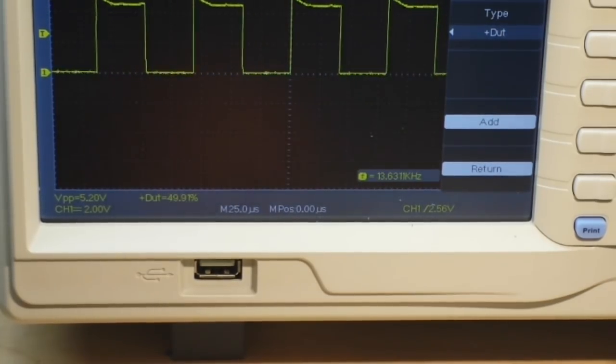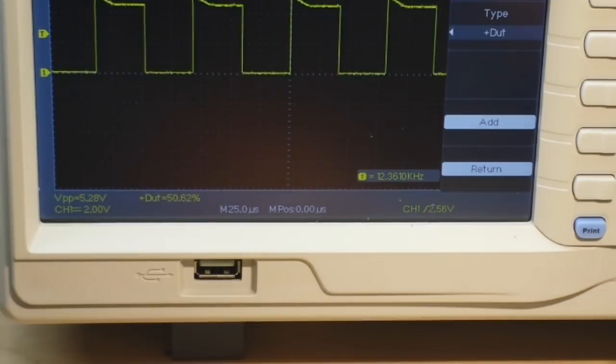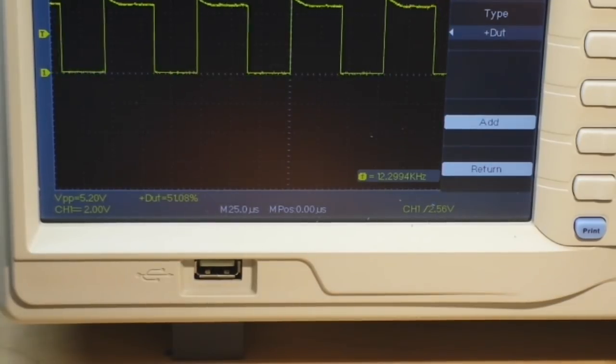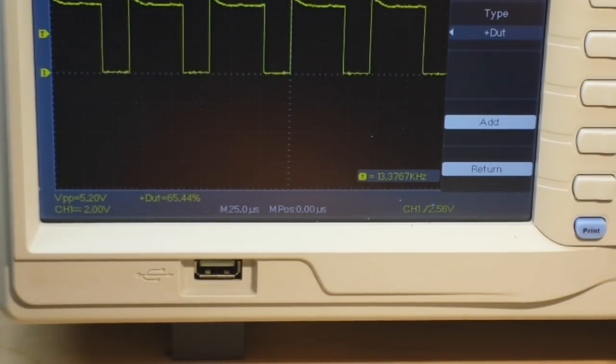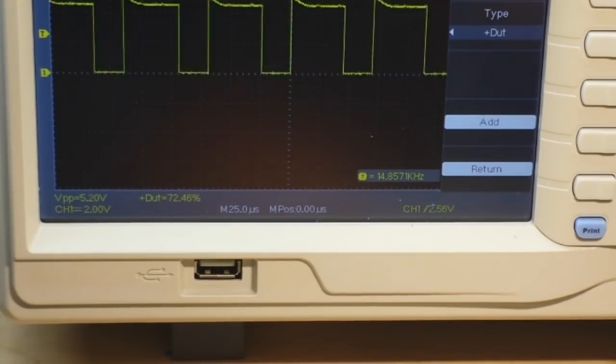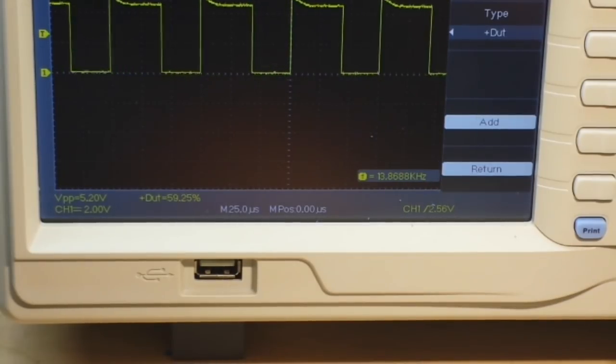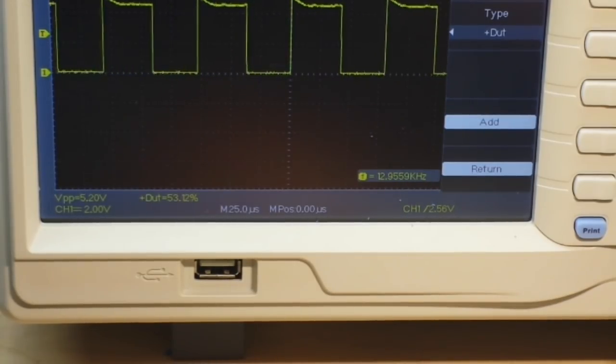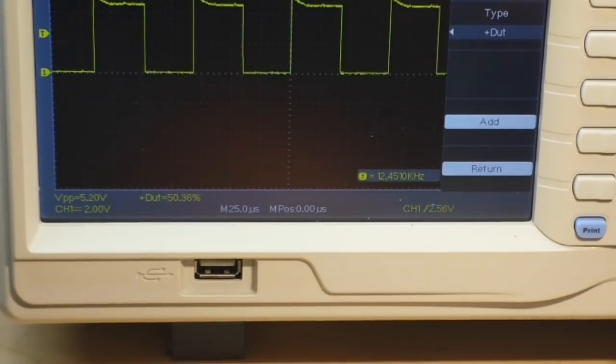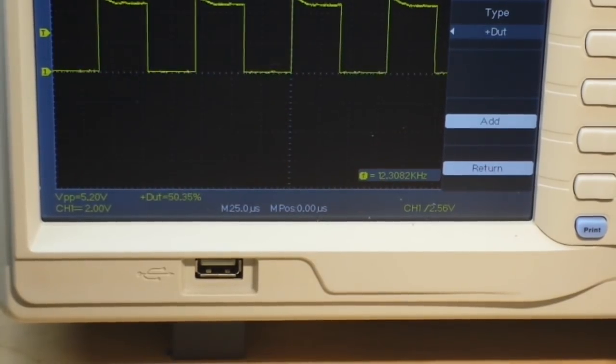If we want to change the duty cycle, we adjust the potentiometer. Now you can see I'm changing the duty cycle. I've been doing this for 30 some years. I'm pretty sure about my methods.